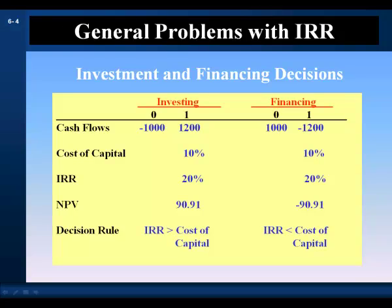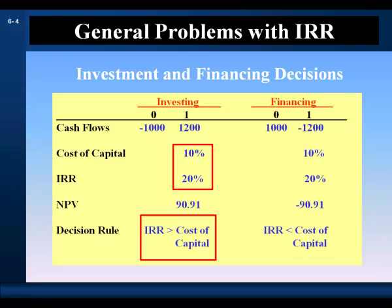Let's consider the IRR decision criteria for investment and financing decisions, beginning with the investment decision. A typical investment project has a first cash flow that is negative and subsequent cash flows that are positive. The IRR decision rule for investment decisions is to accept the project if its IRR is greater than its opportunity cost of capital. This project's NPV is positive, and both the NPV rule and the IRR rule are in agreement.